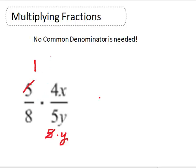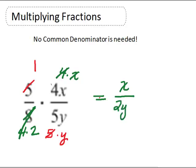4x is the same as 4 times x, and 8 can be factored as 4 times 2, so we reduce these 4s leaving x on top and 2 on the bottom. Now we multiply across: 1 times x is x, and 2 times y is 2y. That's our final answer.